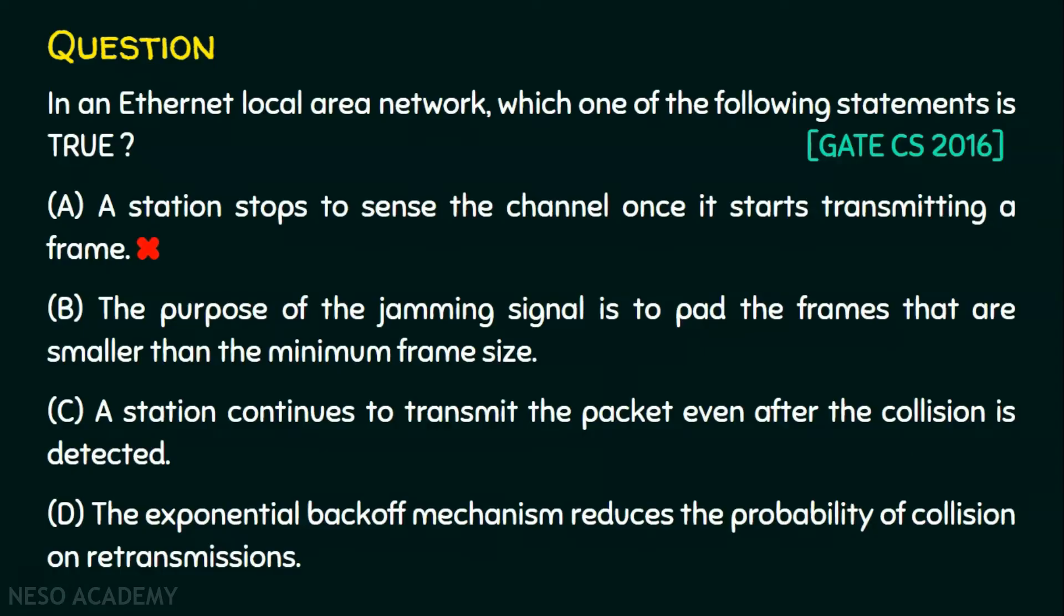Let's now check option B. The purpose of jamming signal is to pad the frames that are smaller than the minimum frame size. Obviously, option B is also false because this is not the purpose of jamming signal. Jamming signal is to inform all other stations about the collision that has occurred and further transmission is stopped.